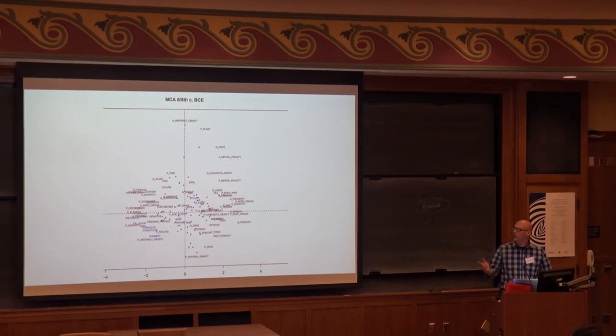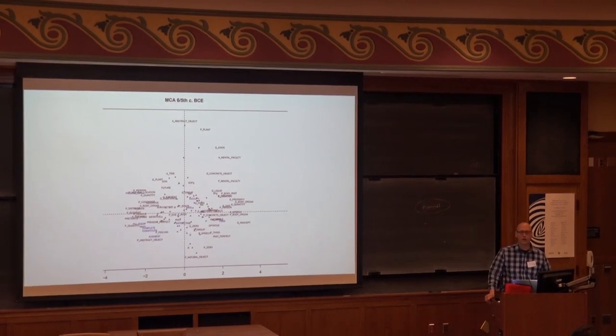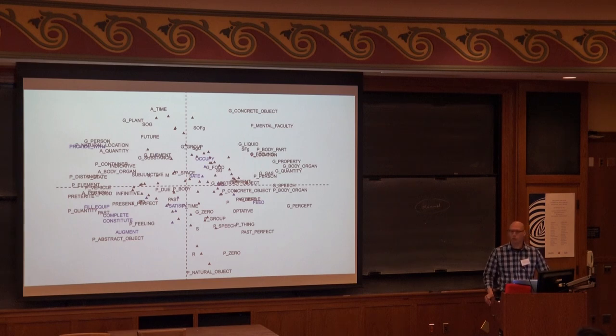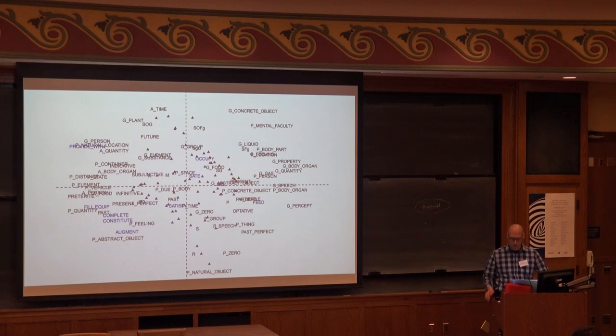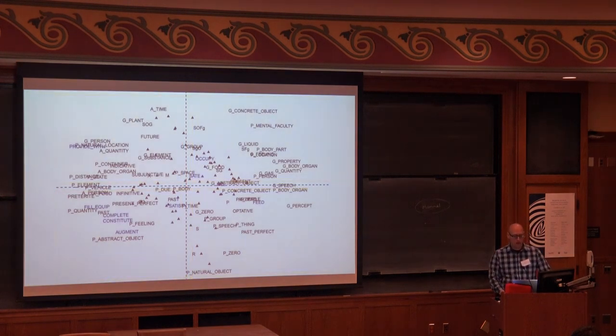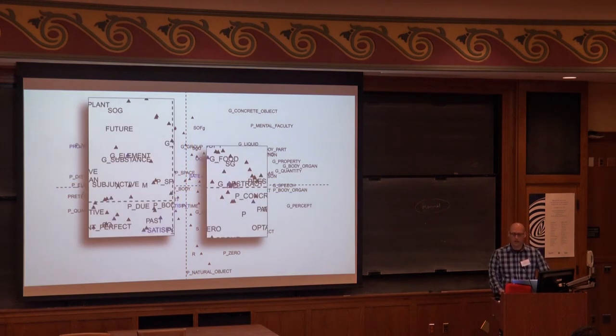So the MCA map looks like this. There is too much information there, which is not easy to decipher, because as I said, we have a multi-dimensional space that somehow is flattened onto the background. Looking a bit closer, we have here two dimensions of the four, five, six, sometimes seven dimensions that are contributing to the variation.